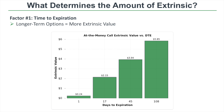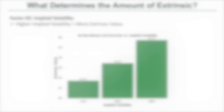Looking at this visual comparing at-the-money call extrinsic value versus days to expiration: at-the-money options have no intrinsic value, so their price is all extrinsic. A call with 1 day to expiration has just $0.24 of extrinsic value, whereas a 108-day at-the-money call has $5.85 of extrinsic value. This makes sense — with 108 days there's far more uncertainty about stock price movement, so people pay more for protection via options, resulting in higher extrinsic value.